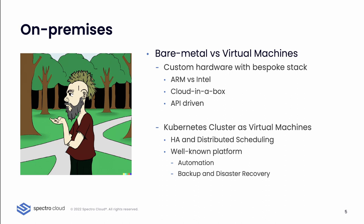Other aspects to consider on-premises: bare metal versus virtual environment to run your Kubernetes nodes. They both have drawbacks and benefits. If you go bare metal, there are a couple of vendors on the market that can provide a complete bespoke stack — from the hardware to the provisioning of your environment to the Kubernetes cluster — giving you a cloud-in-a-box solution that is fully API-driven with Kubernetes in mind, and can also customize the type of processors you want to use to save extra money on energy.